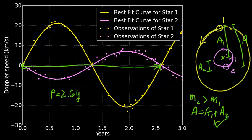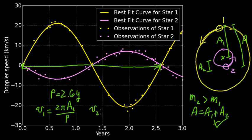To get the sizes of the orbits, consider A1. If we know the speed of star one, we can relate that speed and the time it takes to go around to the distance it travels. Speed is just distance over time, so the speed of star one is the full circumference — 2π times the radius A1 — divided by the period P. This is true for star two as well: V2 equals 2πA2 over P.